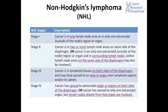Let's talk about non-Hodgkin's lymphoma stages. At Stage 1, cancer is in one lymph node area or in only one extranodal — meaning outside of the node — region or organ. At Stage 2, cancer is in two or more lymph node areas on the same side of the diaphragm, or cancer is in only one extranodal region or organ and in surrounding lymph nodes. Other lymph node areas on the same side of the diaphragm may also be involved.